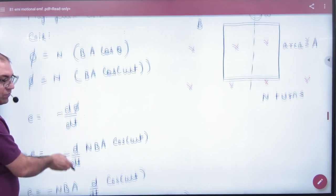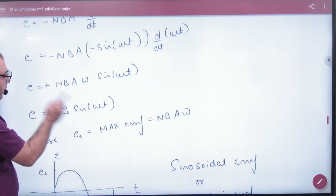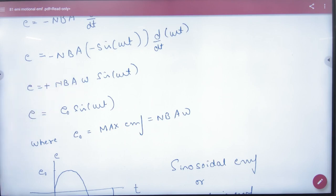Is diagram ke saath, ki jab ye loop aise ghoomega, to itni EMF generate ho ghi. Or is ka maximum EMF kya ho ghi? NBA omega.